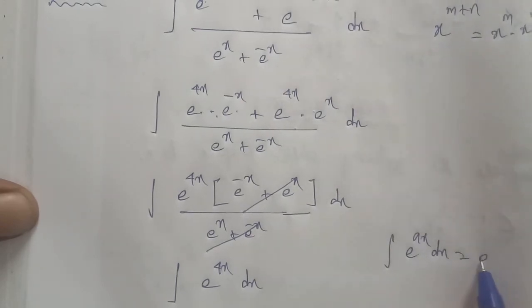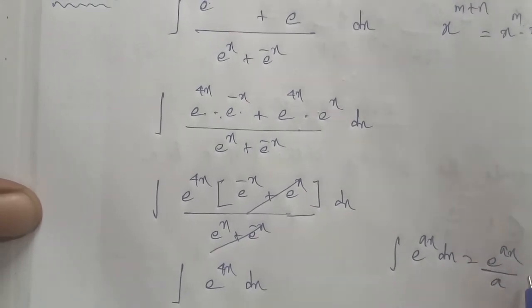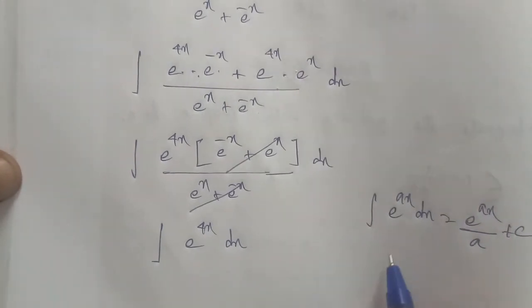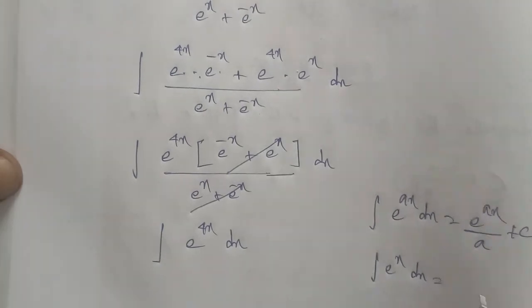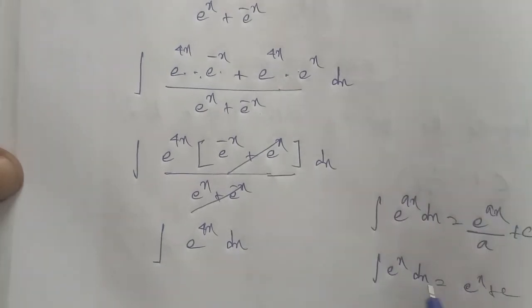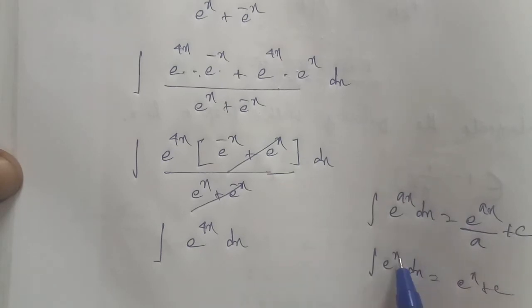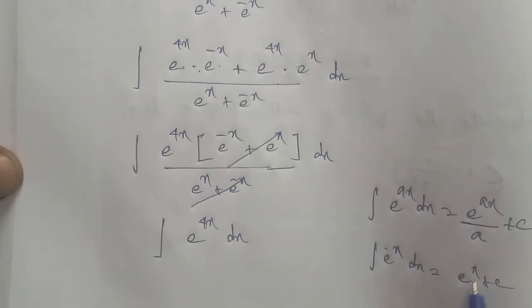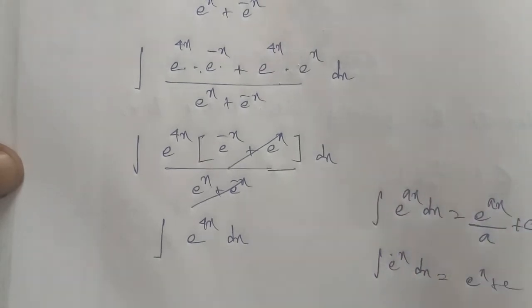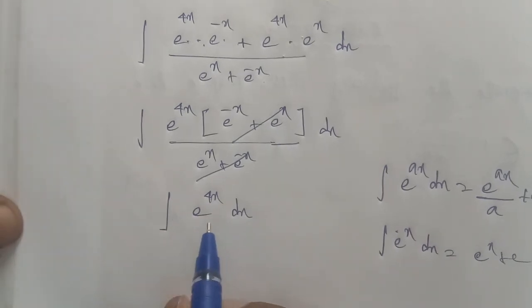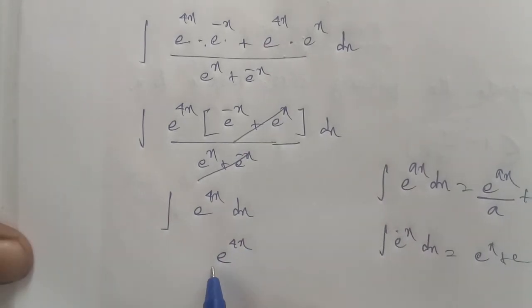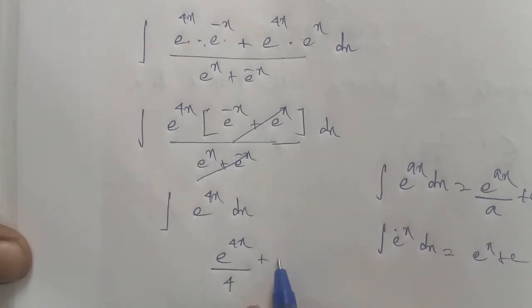Using the integration formula: integration of e power ax into dx equals e power ax divided by a plus c. So the integration of e power 4x into dx gives e power 4x divided by 4, plus constant c.